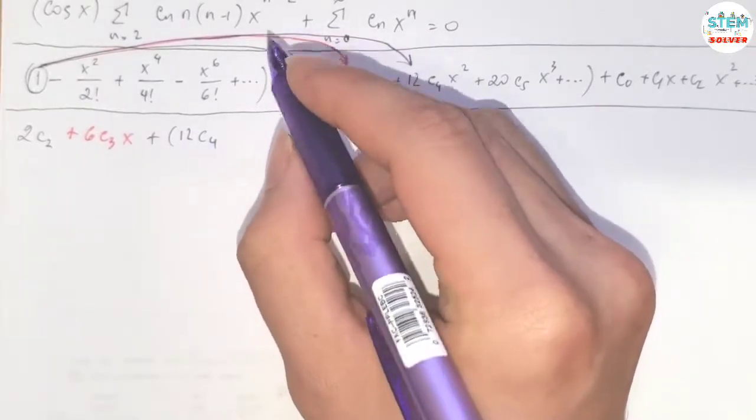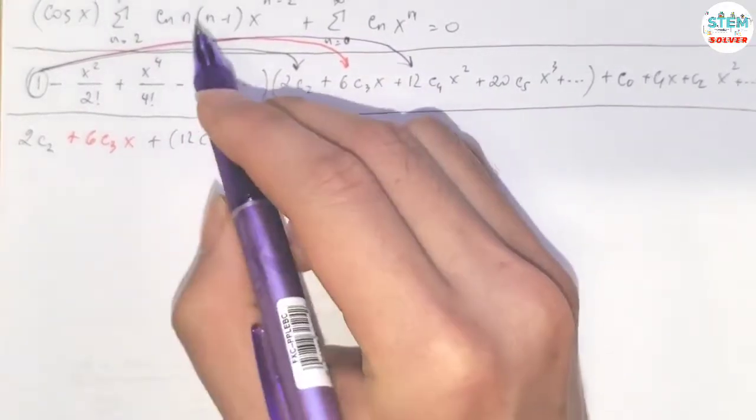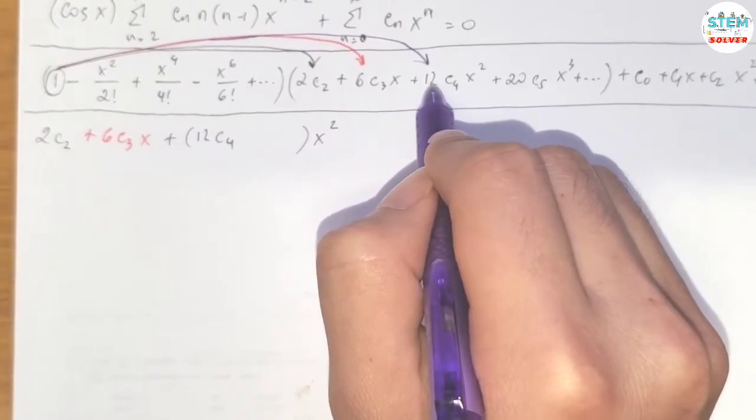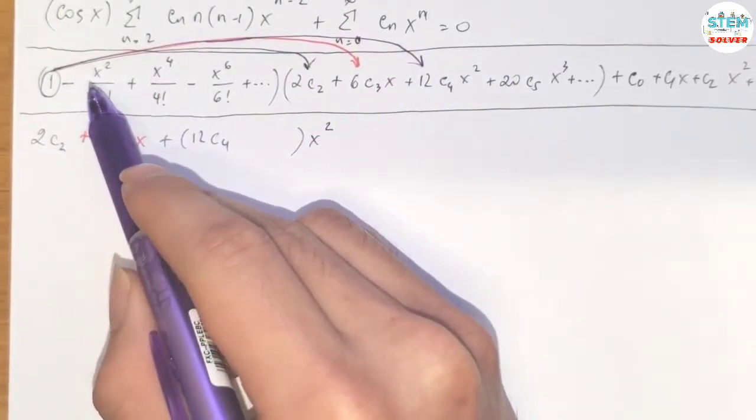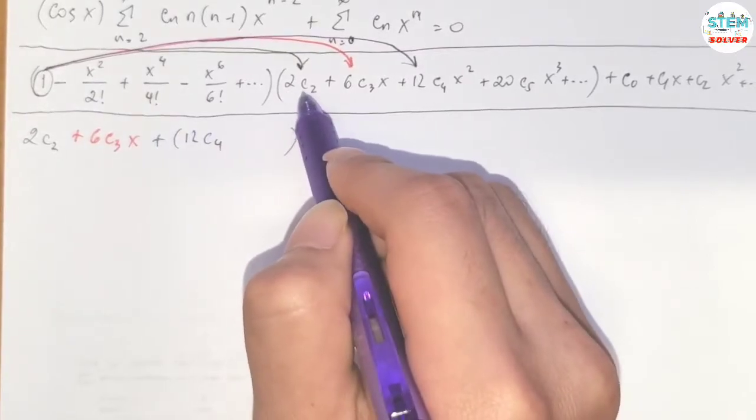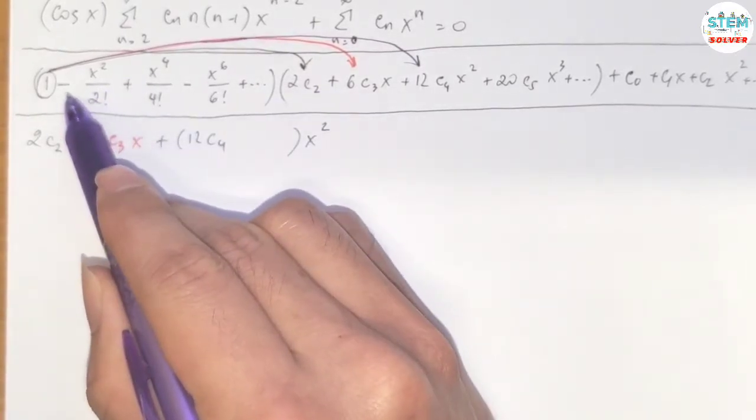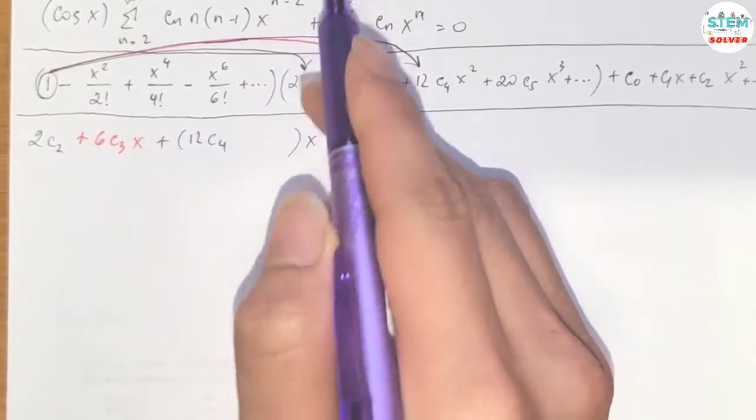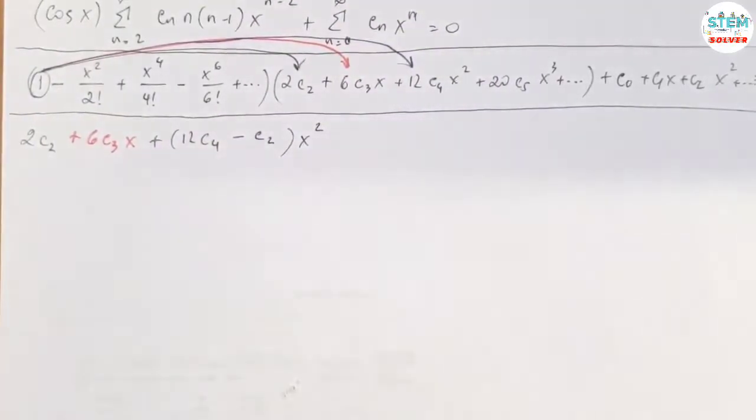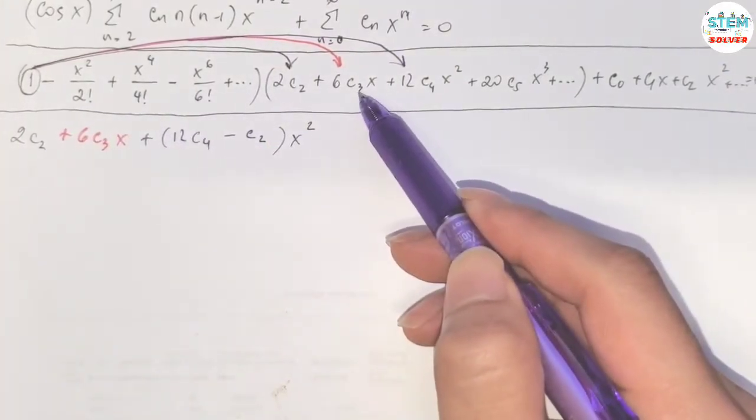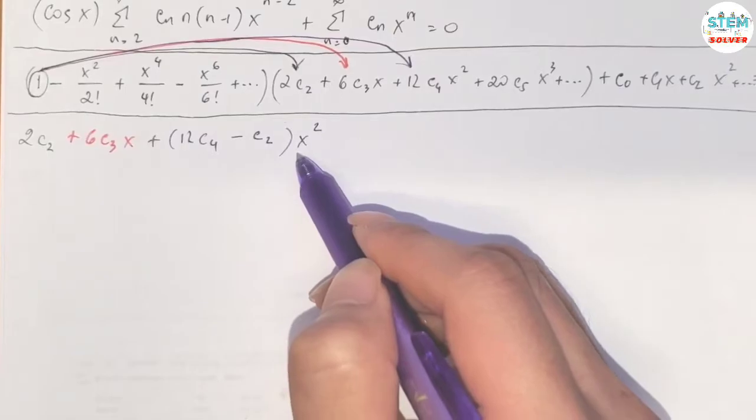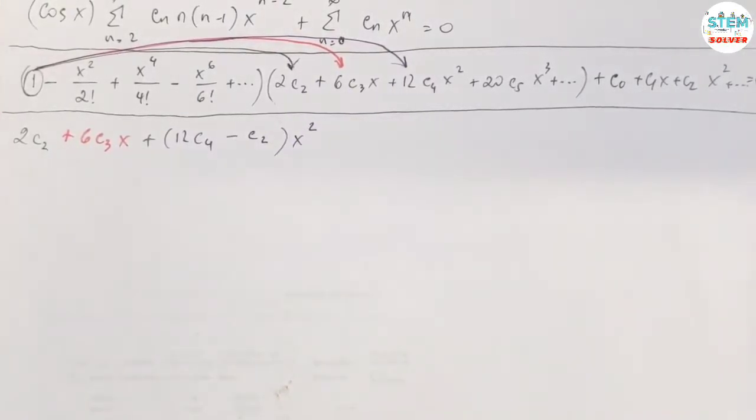Now we go back here and move to the next one. We'll get 12c_4 x squared. Now we're dealing with the x squared term. So I distributed 1 into this one, and then keep circling back to this and move to the next one. Distribute this into this one, I will get another term for x squared which is negative 1 over 2 times 2c_2.